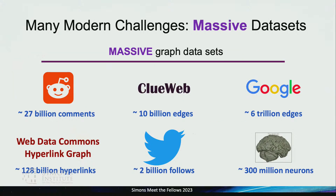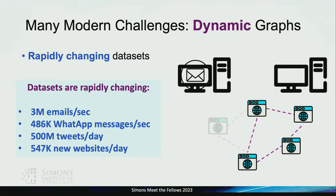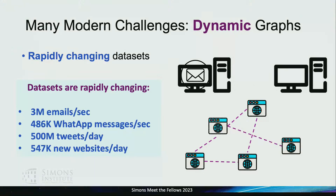So what are some of these modern challenges? One of them is the sizes of these data sets. I've included some common data sets that represent graphs, and the scales can range from hundreds of billions of edges up to trillions of edges. Even just reading these graphs takes hundreds of gigabytes of memory up to several terabytes. And of course, these graphs are rapidly changing — you can have up to millions of changes per second, depending on the type of graph.